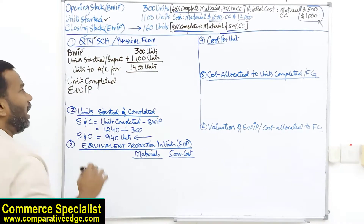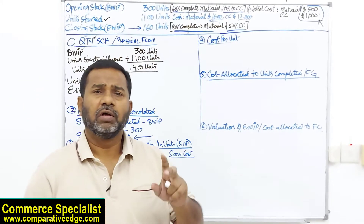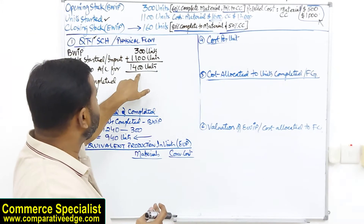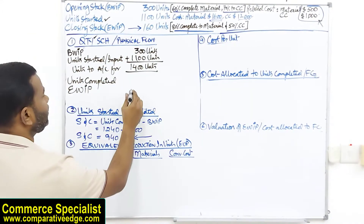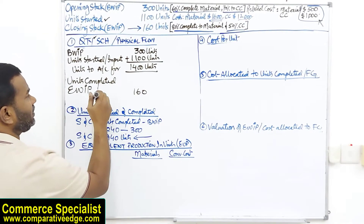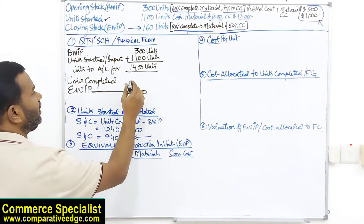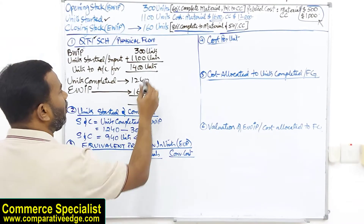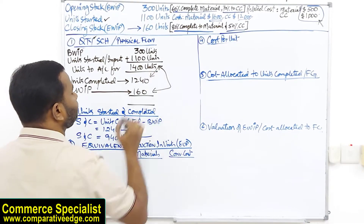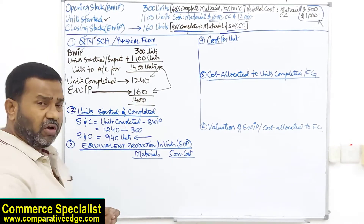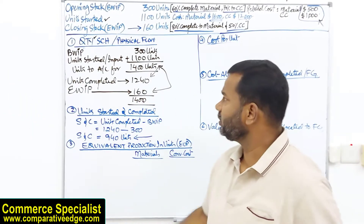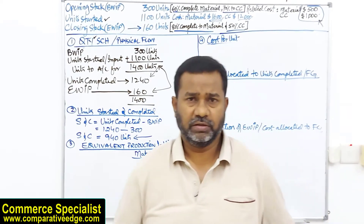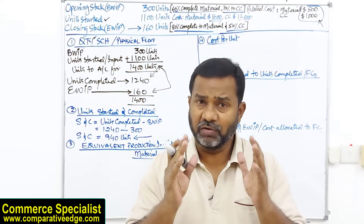Out of 1,400 units, some are completed and some remain in ending work in progress. In exams, at least one of these figures is given. Ending WIP is 160 units, so from 1,400 minus 160, I get 1,240 units completed. My answer to my supervisor: out of 1,400 units, 1,240 are completed and 160 are still in process at year-end. This step is not always required but is highly advisable.